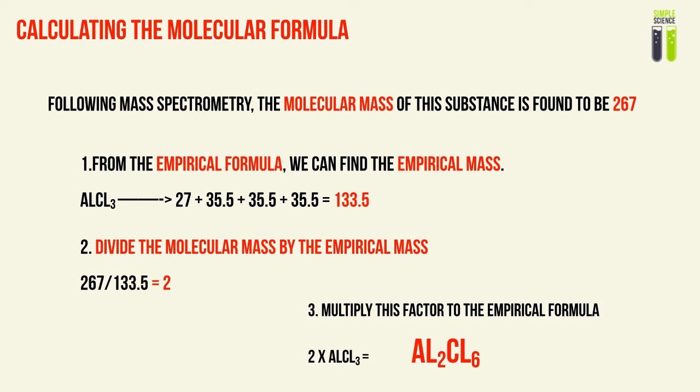So we multiply this factor to our empirical formula — that should give us our molecular formula. When we multiply the factor into our empirical formula, we get the molecular formula, which is Al2Cl6. So basically, you divide the molecular mass by the empirical mass and multiply this to our empirical formula to find the molecular formula. That's all it is.